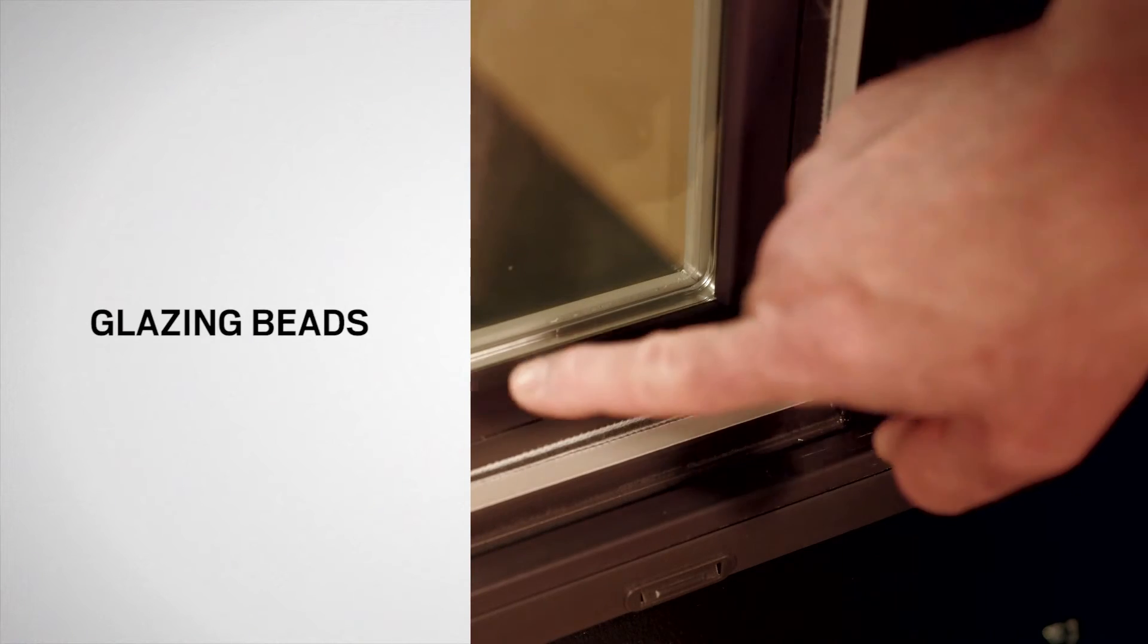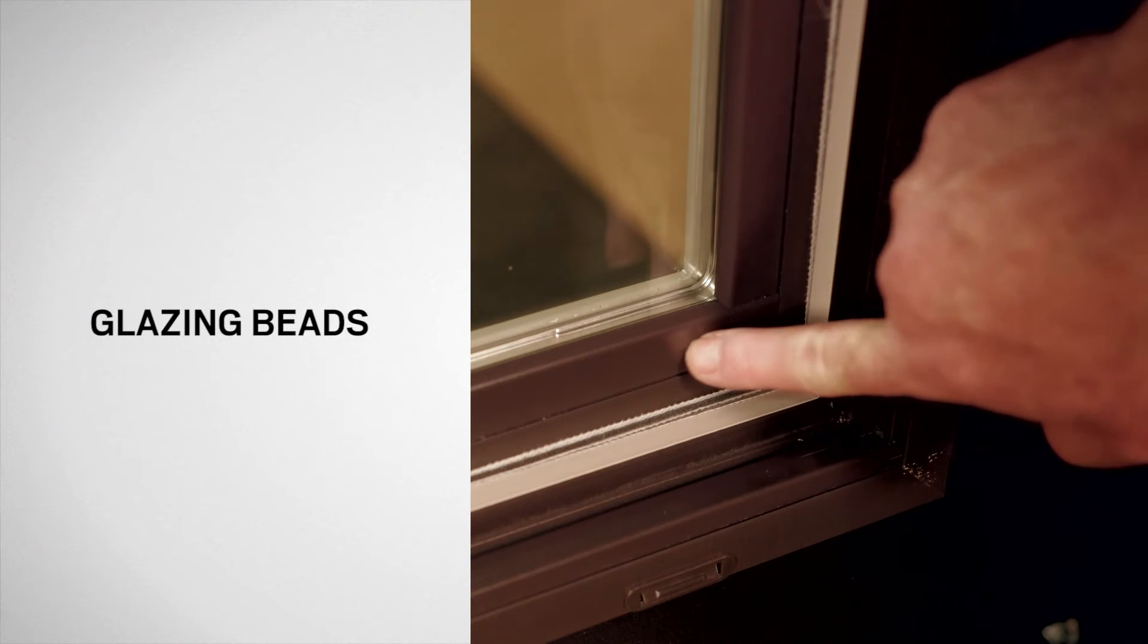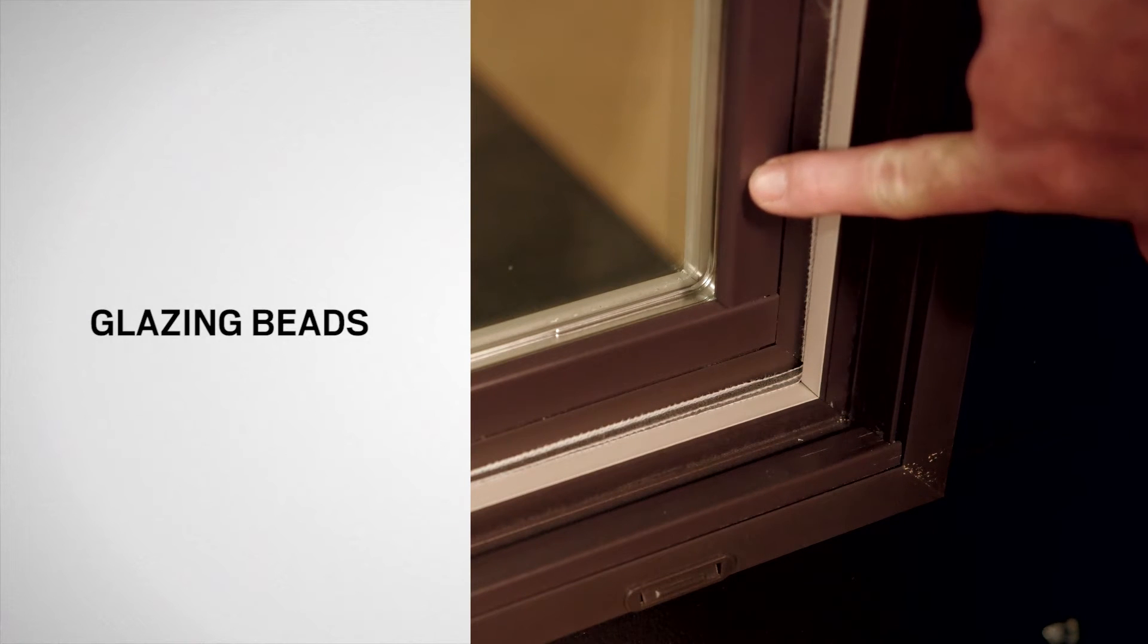The glazing beads are found around the perimeter of the glass and cover the space between the glass edge and the sash.